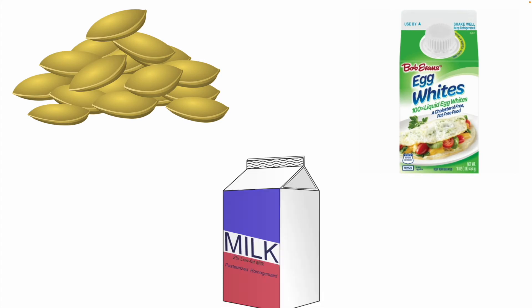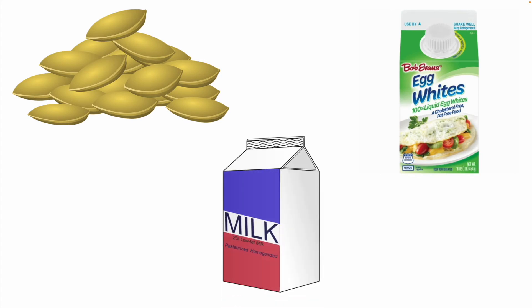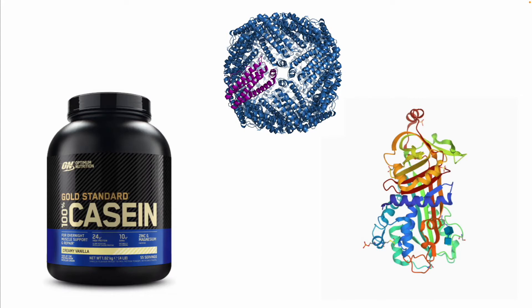Storage proteins are found in egg whites, plant seeds, and milk. There are a few different types of storage proteins that I will be talking about in this video. Those are casein, ovalbumin, and ferritin.